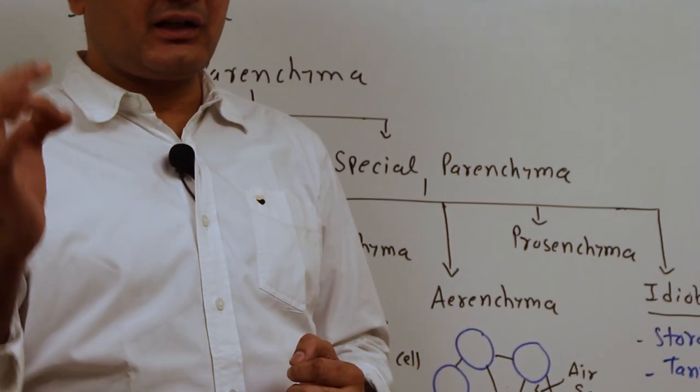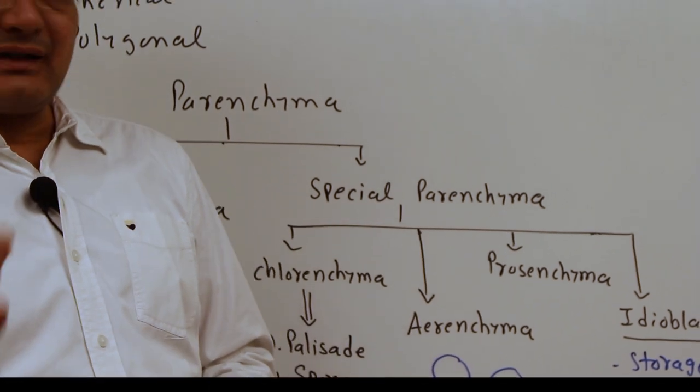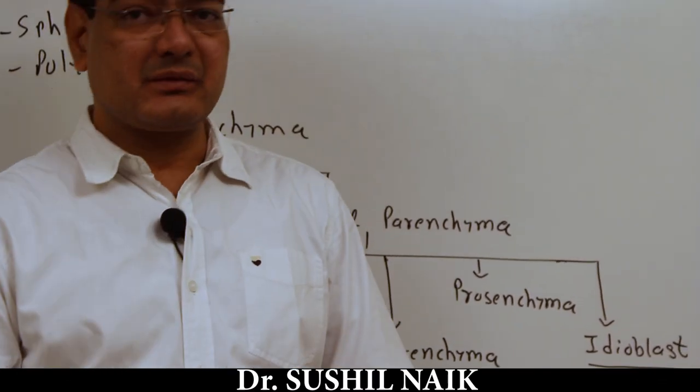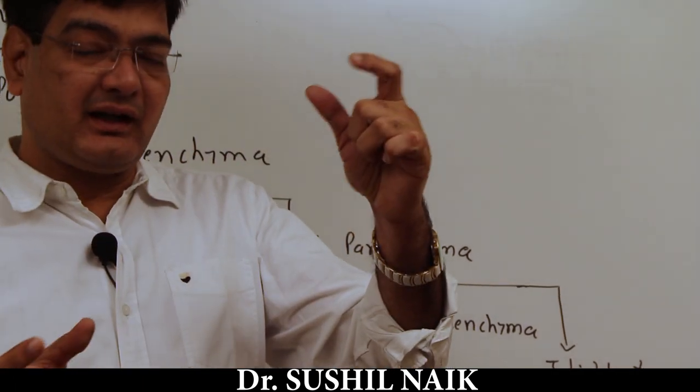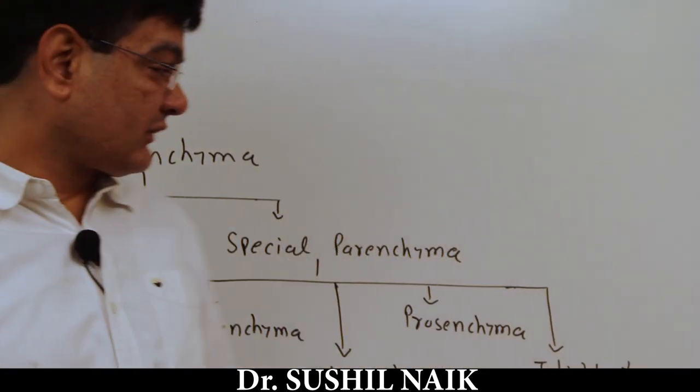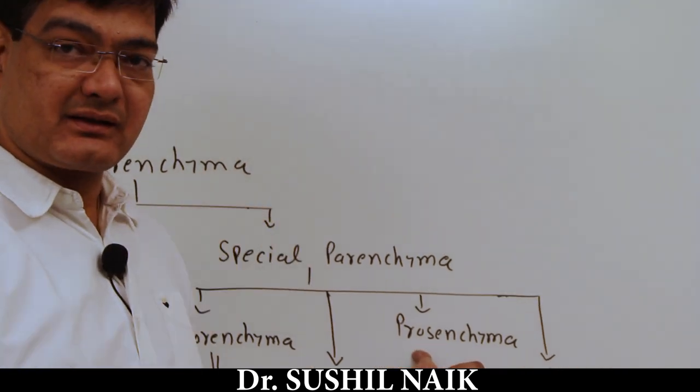Prosenchyma is a specialized kind of parenchyma. Its cells are different from any other parenchyma tissue in that the cells are elongated structures, tapering at both ends. Simply, the cells are fibrous in appearance.